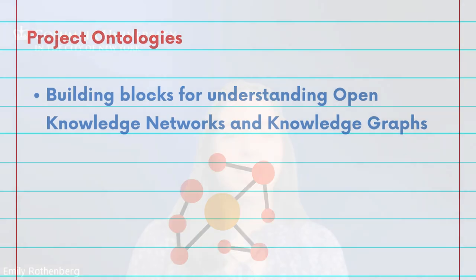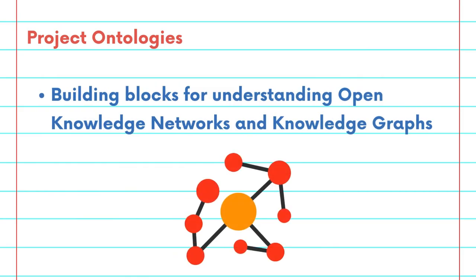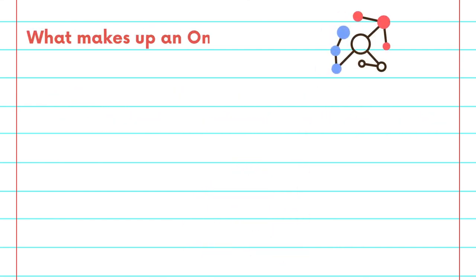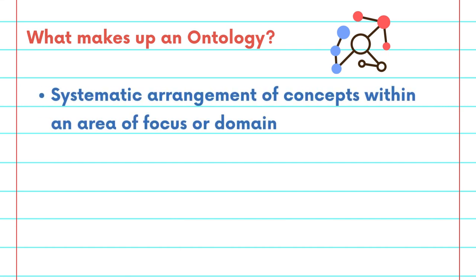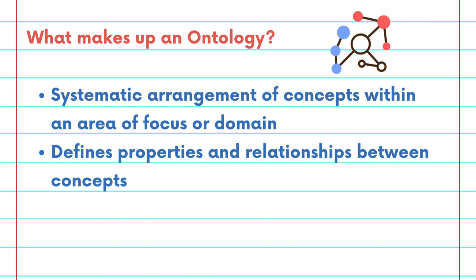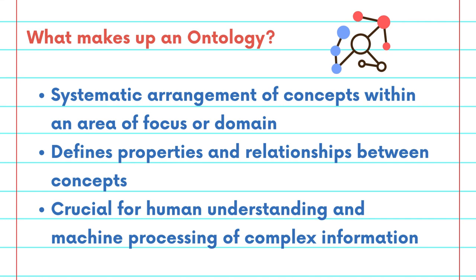Today, we'll be talking about project ontologies. Ontologies are more than just data structures. They are building blocks for understanding the realm of open knowledge networks and knowledge graphs. An ontology is a systematic arrangement of concepts within an area of focus or domain, defining their properties and the relationships between these concepts. This framework is crucial for both human understanding and machine processing of complex information.